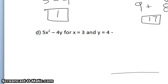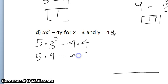Now on letter D, we have 5x squared minus 4y. And there are variables. That negative sign is a mistake. Don't worry about that. Okay, so 5x squared, I'm going to substitute in x equals 3. So 5 times, there's that invisible multiplication sign. 3 squared minus 4 times y is equal to 4. So I do order of operations. 3 squared comes first. 5 times 9 minus 4 times 4. Multiplication comes next. 5 times 9 is 45 minus 4 times 4 is 16.